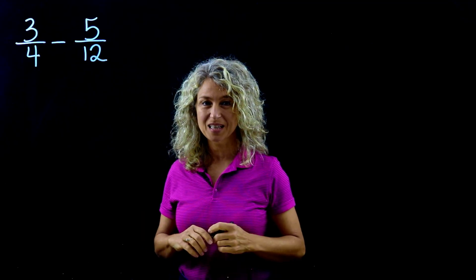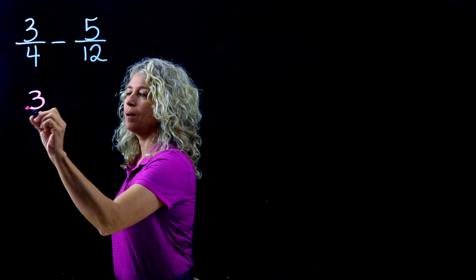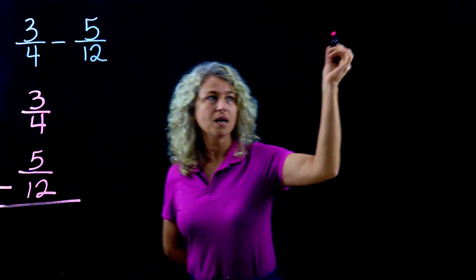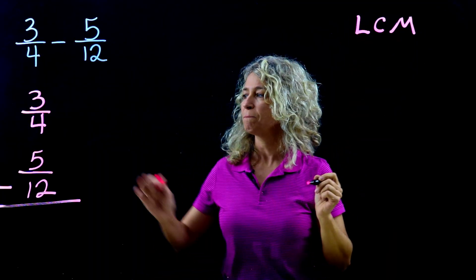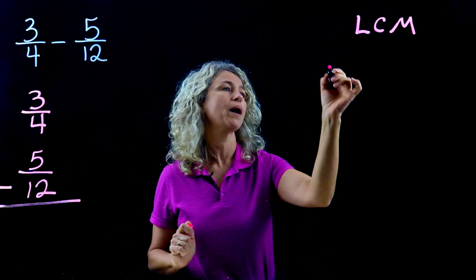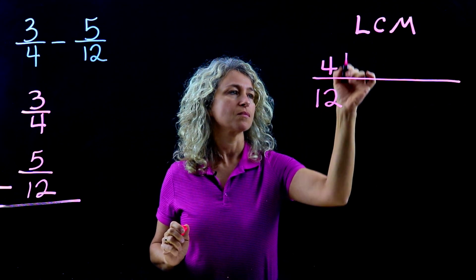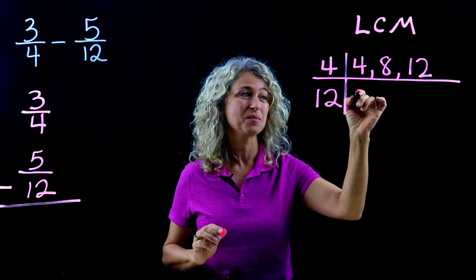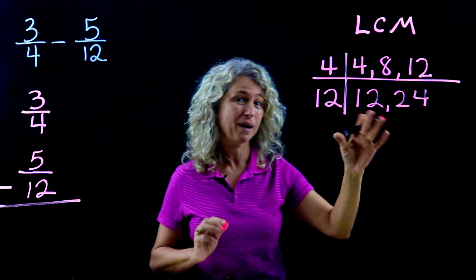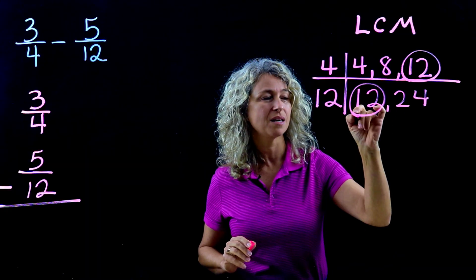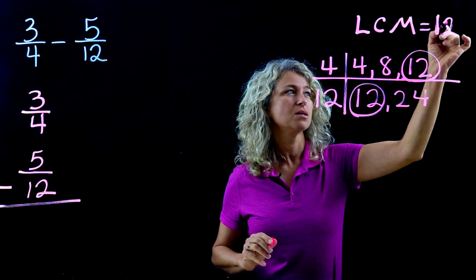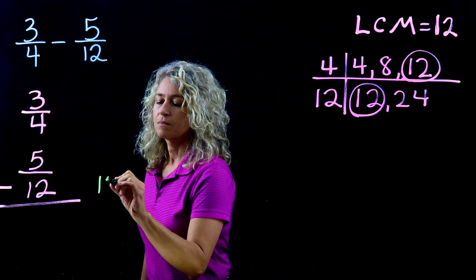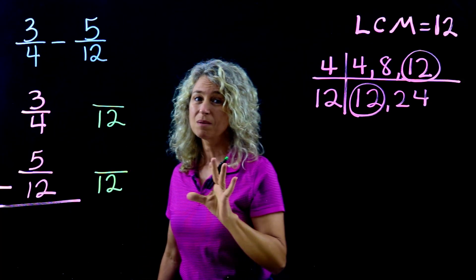Let's do this last one together. Rewrite the problem vertically: 3/4 minus 5/12. Find the LCM — looking at denominators 4 and 12. Listing multiples: 4, 8, 12. We really don't even have to go past 12 because 12 is going to be the LCM for these numbers. Come over and let's make equivalent fractions with 12 as the new denominator.